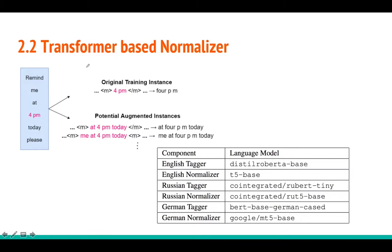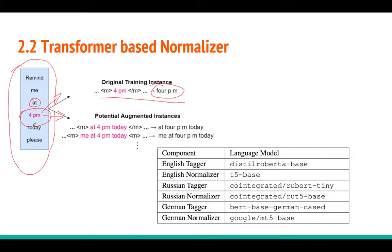This slide shows how data augmentation is done during training. The tagger identifies which parts to normalize. You can feed just that segment, or also include left and right context — for example, 'at 4 p.m. today.' You can create many such segment variations to add to training data, which improves performance. This is the data augmentation trick.